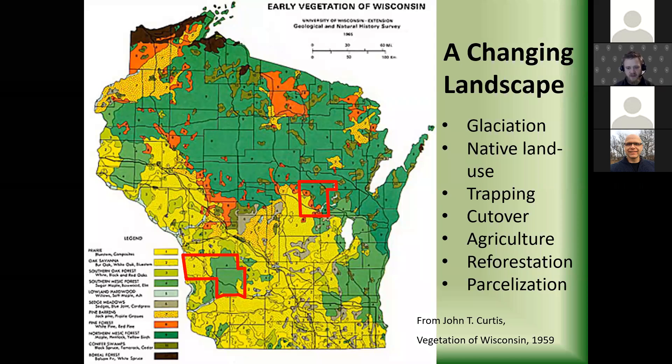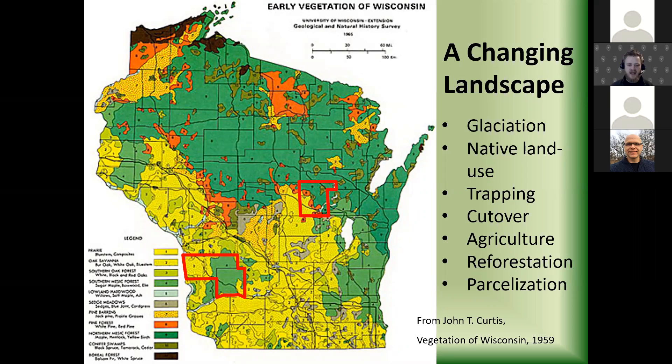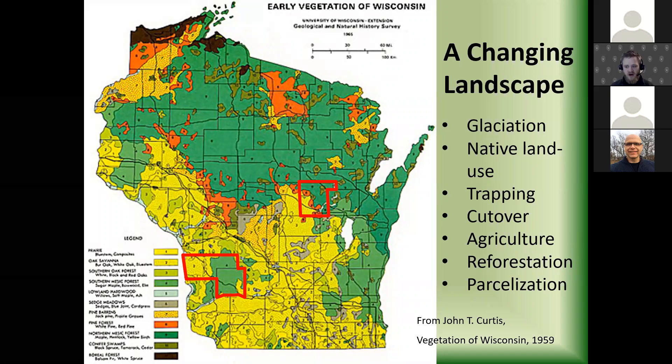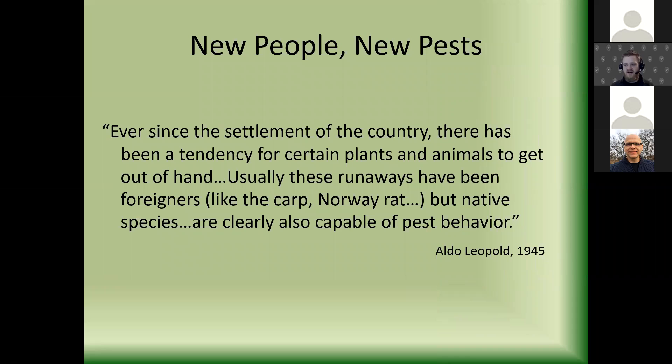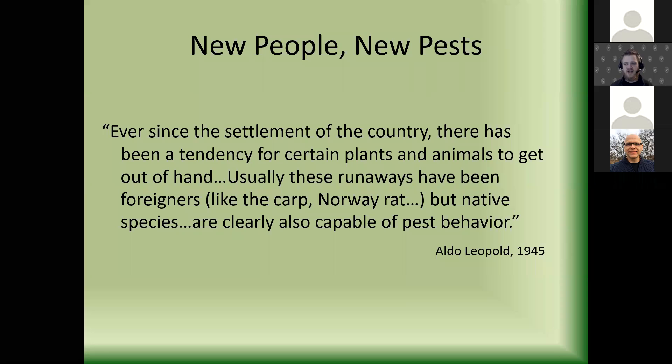We're getting into a stage where particularly in the southeastern and southwestern parts of the state, there's a lot of parcelization of larger properties — big contiguous chunks of land being chopped up through ownership changes — and that's having a dramatic impact on forest communities. We've got a long history of land use and vegetation changes across Wisconsin, and we're in another period of change. Tonight we're talking about the role of invasive species in that.